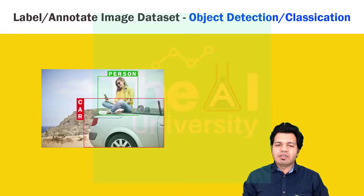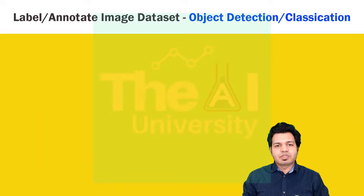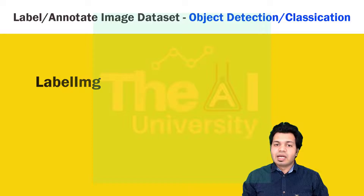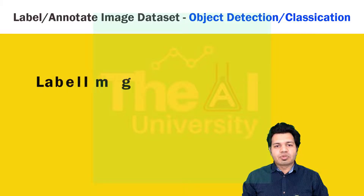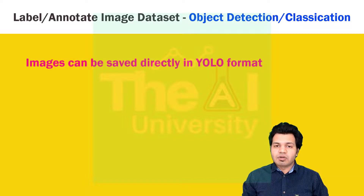Here we will be using a tool called labelImg, which is very simple to use, free, and open source, and which allows us to create bounding boxes. Using this tool you can save your annotations directly in YOLO format. One good thing is that we don't need to resize any image in the dataset — YOLO takes care of image size during training.